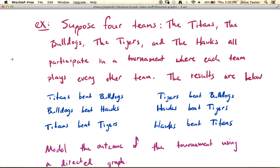The results are: Titans beat Bulldogs, Bulldogs beat Hawks, Titans beat Tigers, Tigers beat Bulldogs, Hawks beat Tigers, and Hawks beat Titans.